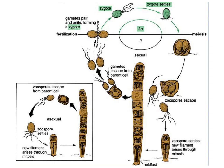Eulothrix species mainly reproduce by vegetative means, in this case fragmentation, but they can also reproduce asexually with motile and non-motile spores, as well as sexually. It is important to note that Eulothrix's sexual reproduction is isogamous, meaning that the gametes have similar morphology and do not differ in shape or size. We will see other forms, such as anisogamy and oogamy, in other organisms from this lab and future lectures.